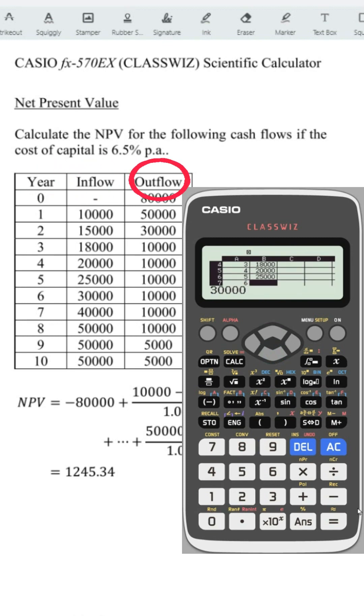Enter the years, inflows, and outflows under columns A, B, and C respectively.